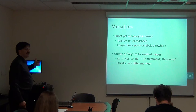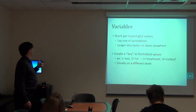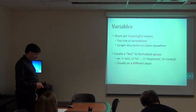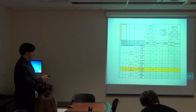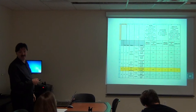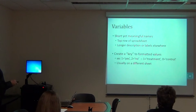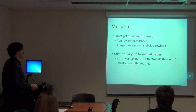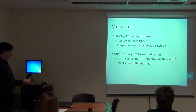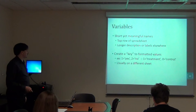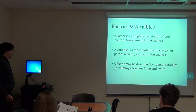For variables, we like to have a short name that identifies things — think about what you would file it under. Often you want a longer description, and a lot of people put that in a different row or different spreadsheet; I can use those longer descriptions as labels and attach them to the analysis later. Having a key for your formatted values — so if one is yes and two is no — is important. I actually use something very similar in SAS to attach text to data values. It's usually on a different sheet, but in my example it was on the same sheet — that works and wasn't too hard to fix.